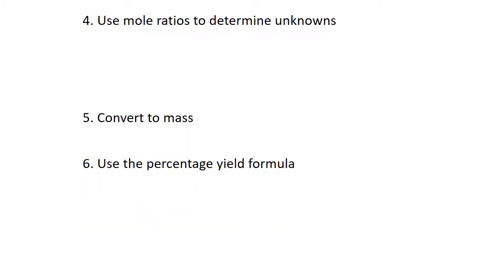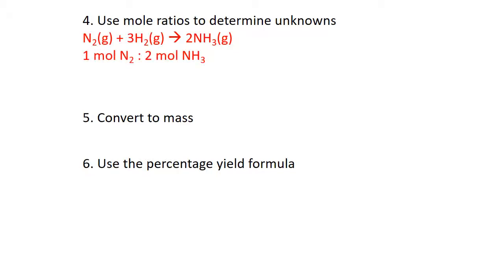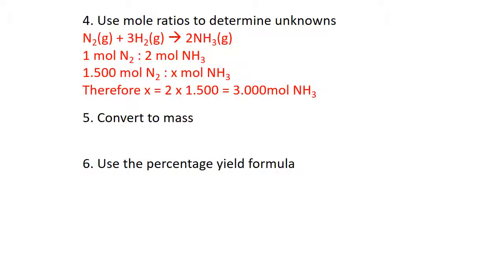Use the mole ratio from the equation to determine the unknowns. The equation says for every mole of nitrogen, it reacts with three moles of hydrogen to give two moles of ammonia — a mole ratio of one to two. Therefore, if you have one and a half moles of nitrogen and need to find x moles of ammonia, do your cross-multiplication: x equals two times one and a half, so three moles of ammonia.